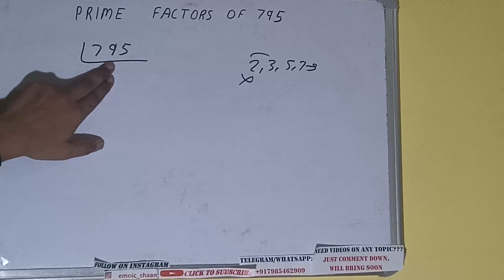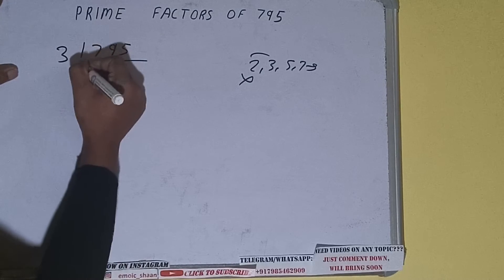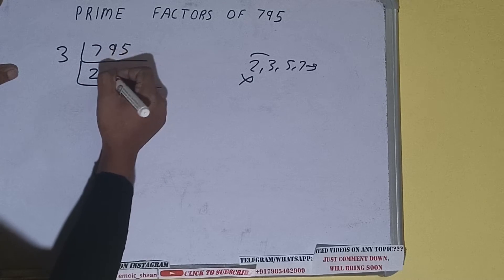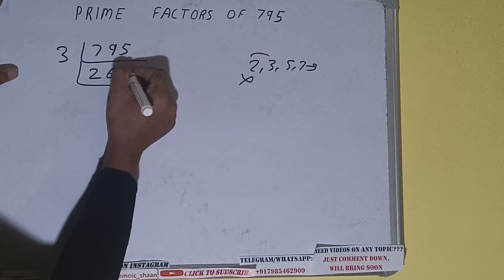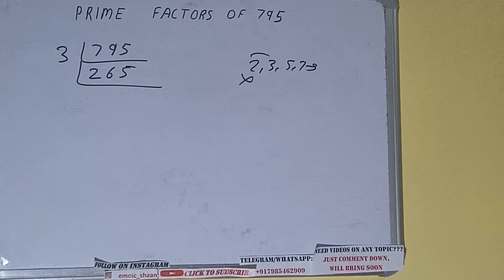So let's divide 795 by 3. We'll be having 265. Is 265 further divisible by 3? Let's check... It is not divisible by 3.